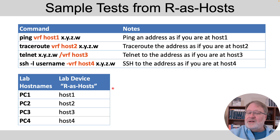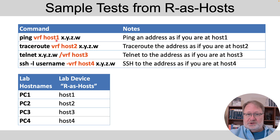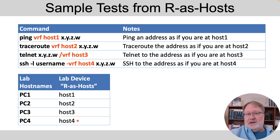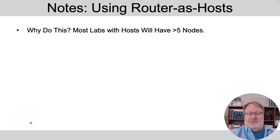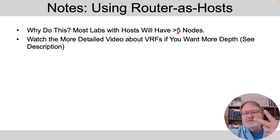I have two other videos that go into far more depth on this feature. If you want to try it, you should watch those first — it's really too tricky without them. But here's the basic idea: you get to the console of that one router and type 'ping vrf host1' to ping as if you are PC 1, or 'ping vrf host2' to ping as PC 2, and so on for host 3 and 4. Look above my head or in the description for links to those two videos about routers as many hosts.